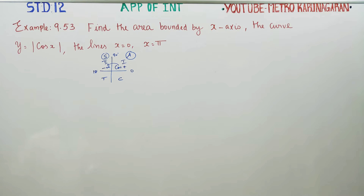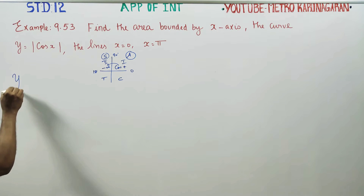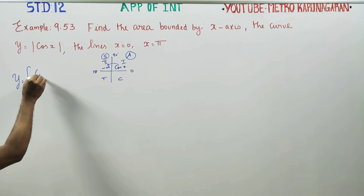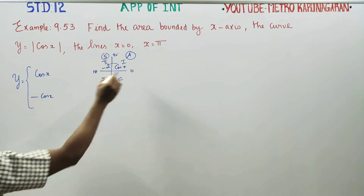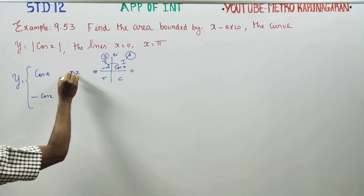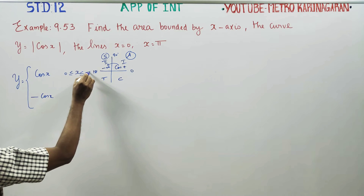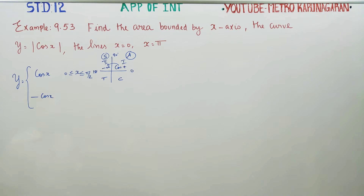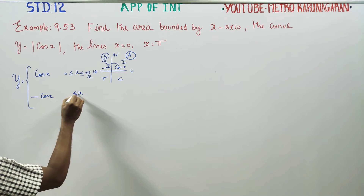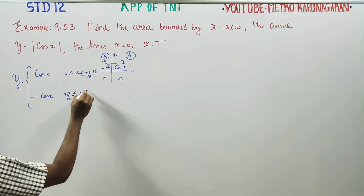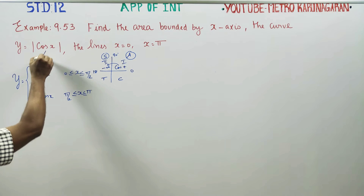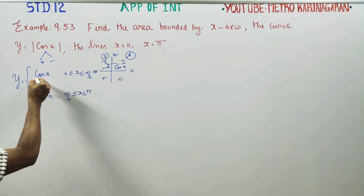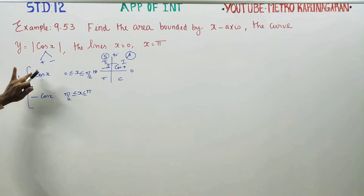In the context of this problem, y in the second quadrant splits into two parts: one positive cos x and one negative cos x. When x is between 0 to 90, cos x is positive. When x is between 90 to 180, cos x is negative. So modulus gives us plus or minus depending on the quadrant — plus part and minus part.